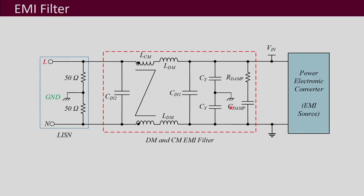Welcome to the course on design of power electronic converters. We were discussing electromagnetic interference and had started discussing EMI filters. This is an example of an EMI filter meant to filter out both differential mode and common mode noise, using a pi structure — that means you have C, L, and C.